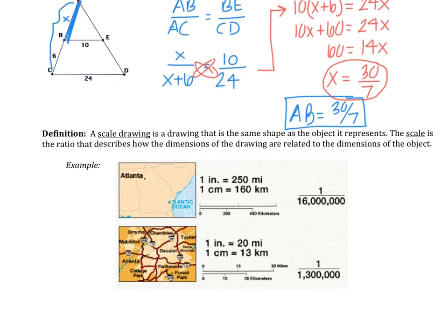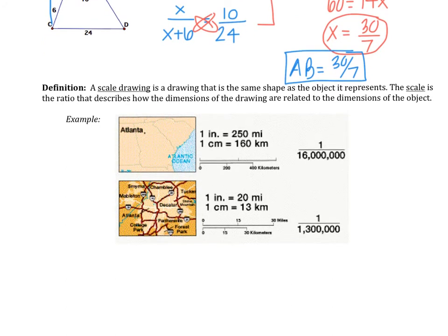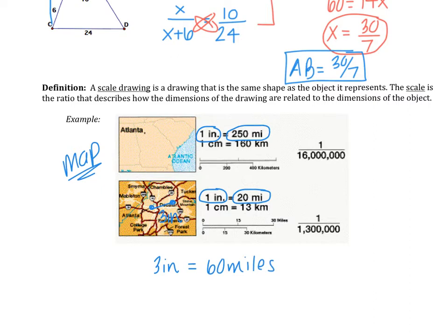Moving on, we have a definition of what a scale drawing is. A scale drawing is a drawing that is the same shape as the object it represents. The scale is the ratio that describes how the dimensions of the drawing are related to the dimensions of the object. A really good example of a scale is in a map, which is shown right here. It says one inch on a map is really 250 miles in real life. For the next one, it says one inch is really 20 miles in real life. For example, if I measured maybe like this city to this city, and I find that it's three inches, well three inches in the picture really is 60 miles in real life. You wouldn't be able to see 60 miles on a piece of paper. That's why you have a scale.